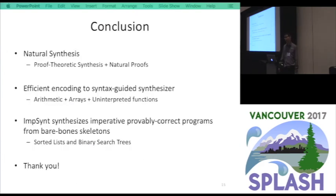Okay, so to conclude, we propose natural synthesis, which is the integration of proof-theoretic synthesis with the natural proof methodology. We developed an efficient encoding to synthesis guide using arithmetic arrays and uninterpreted functions. And for data structure manipulations, we have implemented imp-synth, which can synthesize sorted list and binary search tree implementations from bare bones skeletons. That's all. Thanks.